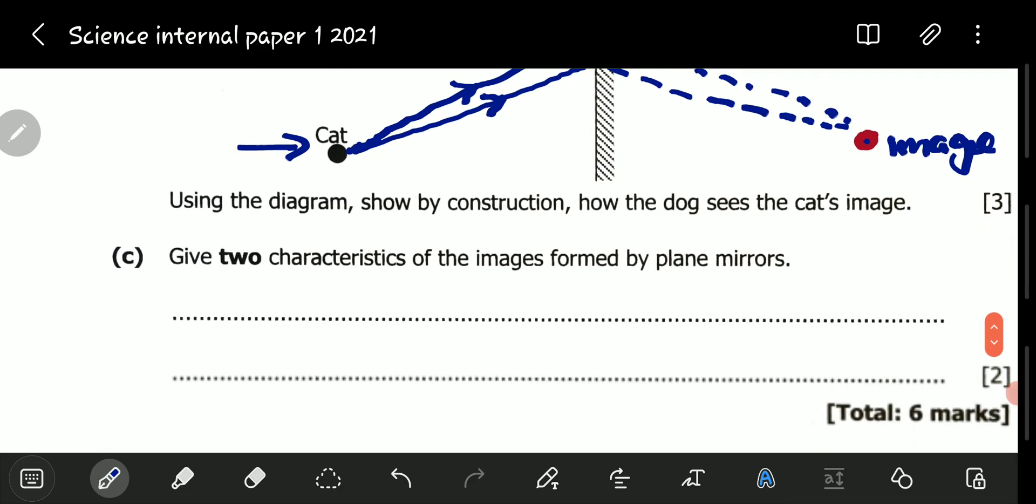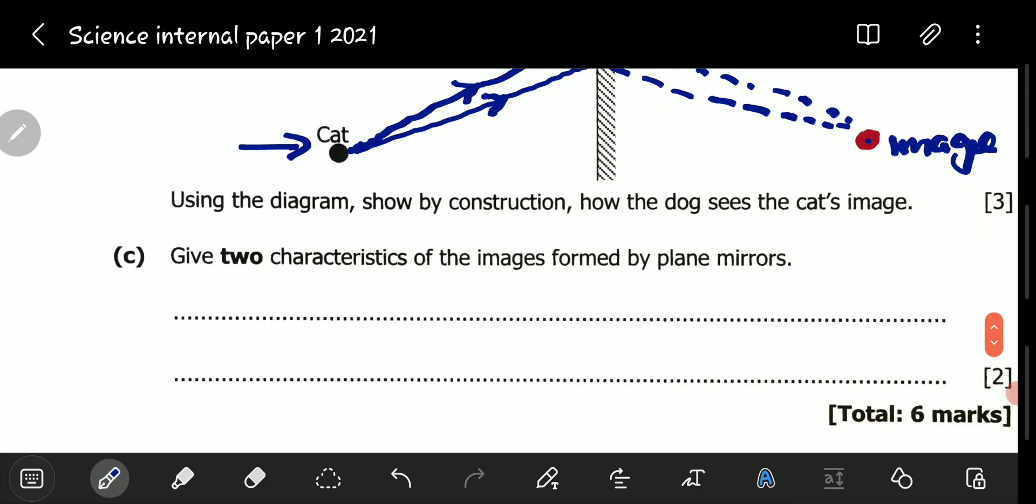We proceed to C. C is saying, give two characteristics of the image formed by plane mirrors.